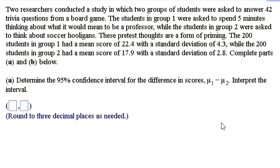All right. So what do we have? Two researchers conduct a study in two groups of students. They're asked to answer 42 trivia questions from a board game. The students in group one were asked to spend five minutes thinking about what it would mean to be a professor. While the students in group two were asked to think about soccer hooligans. These pretest thoughts are a form of priming. And this is an actual study that was done. And these results are similar to the results from the actual study that priming with thoughts of being smart actually helps you to be smarter. That's very surprising, but apparently true.